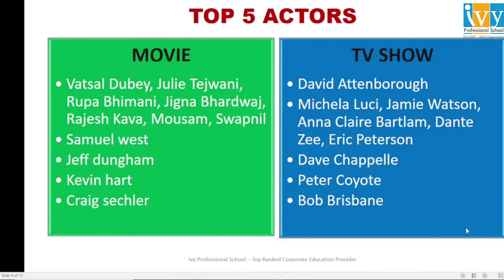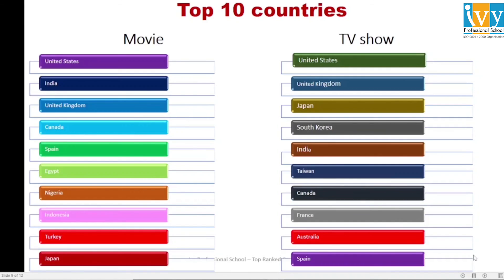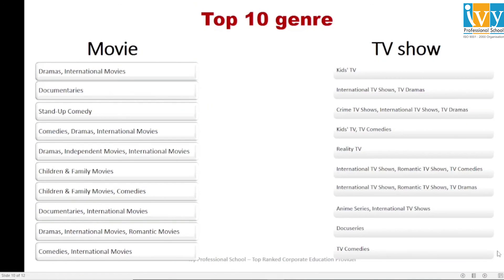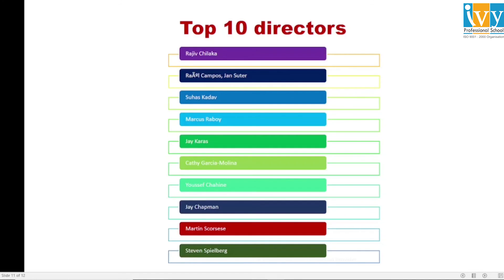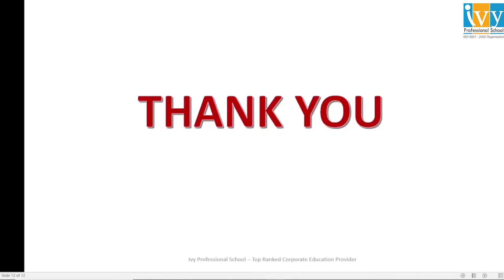This is the list of top 5 actors for movies and TV shows in decreasing order. This slide shows the top 10 countries in terms of movies and TV shows, and the top 10 genres. These are the names of the top 10 directors on Netflix. This is all about the presentation. Thank you.